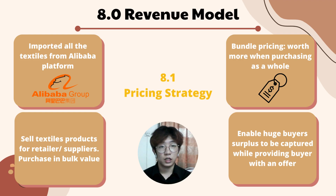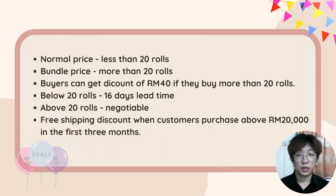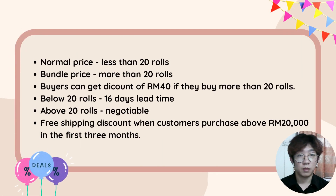The pricing strategy used by our company is bundle pricing. Bundle pricing is a business strategy where companies combine several goods into one package and sell it for one price, as opposed to allocating separate costs to each item. With bundle pricing, significant buyer supplies may be gathered while still making an attractive offer to buyers. For the first half of the year, our business will use this pricing strategy to enter the market and provide clients with high quality fabrics at the lowest possible price. We count it as normal price if buyers purchase less than 20 rolls; on the other hand, they can get bundle pricing if they buy more than 20 rolls, which is cheaper than the normal price.